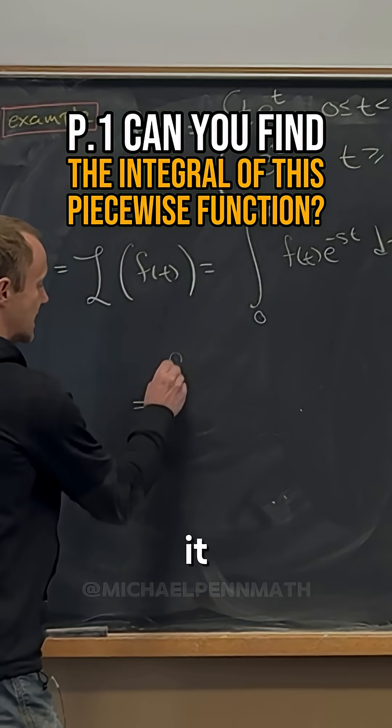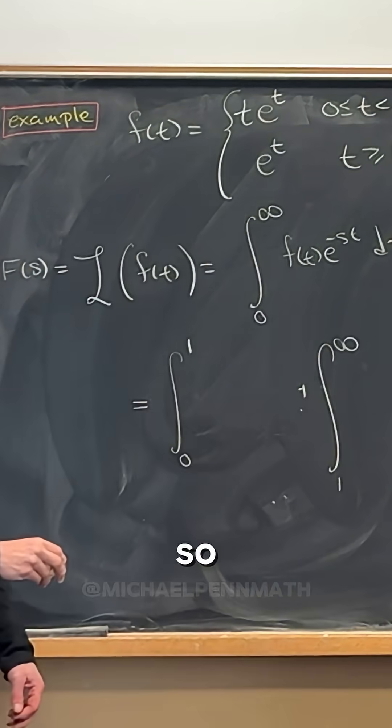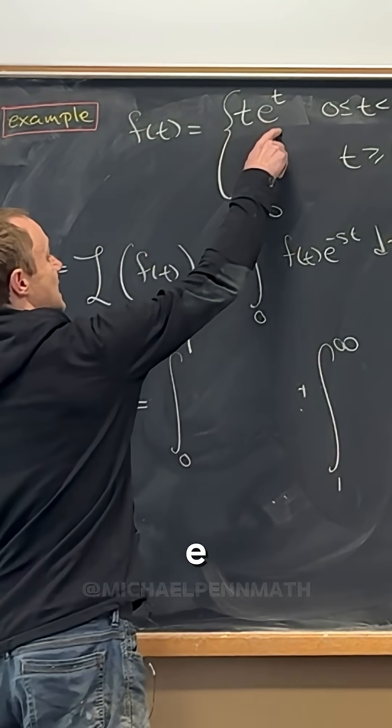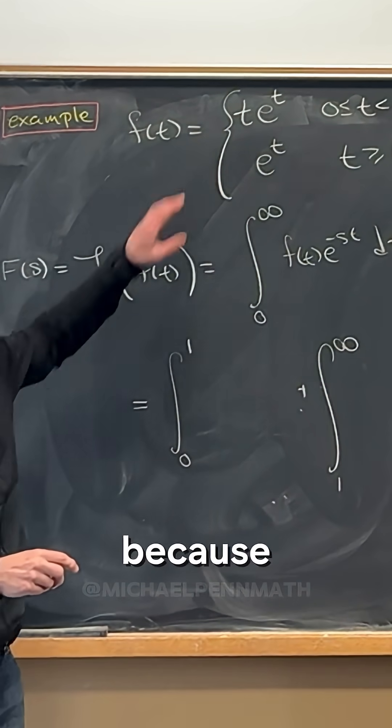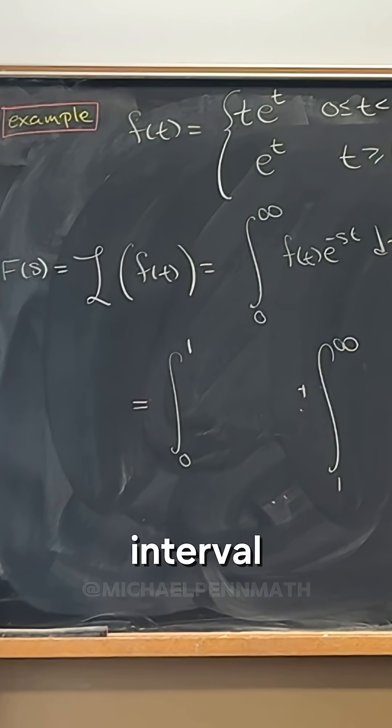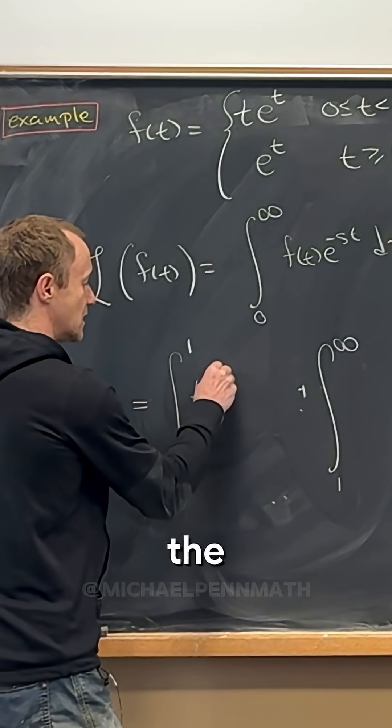What you can do is break it into pieces. The integral of t*e^t times e^(-st) from 0 to 1, because f equals t*e^t on the interval from 0 to 1. That's going to be t*e^((1-s)t) dt.